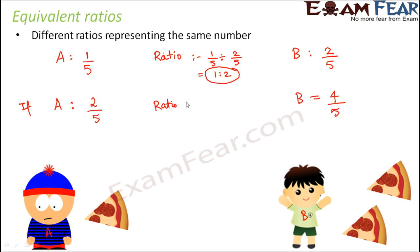The ratio here would be 2/5 divided by 4/5. How much would this be? This is not 1 is to 2. This is going to be 2 is to 4.